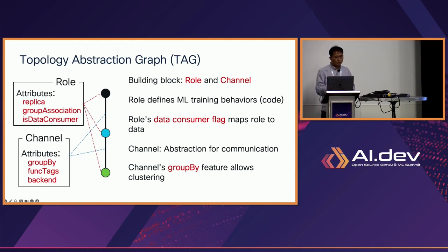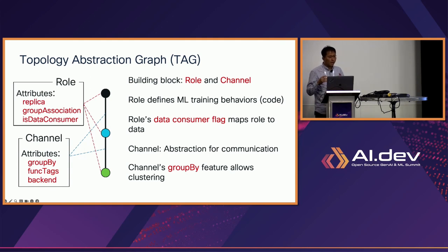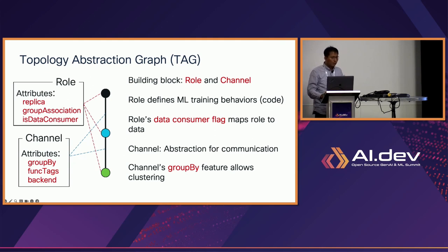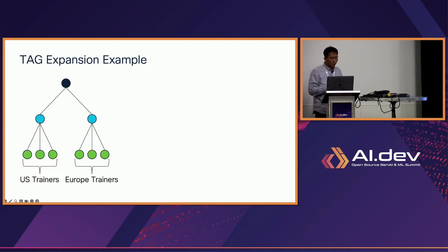TAG is represented with two building blocks: role and channel. Role defines the ML training behavior and therefore has associated code. Channel can be thought of as an abstraction for communication. The channel has a specific attribute called group-by, which allows the clustering of workers to support different topologies. I will not go over details, but I will show how these features are used with a small toy example.